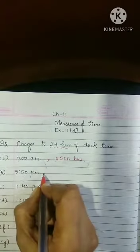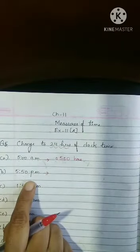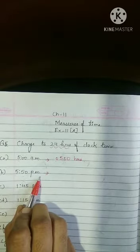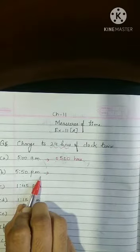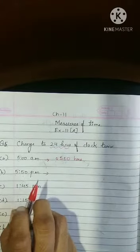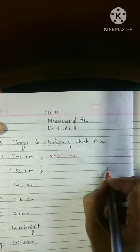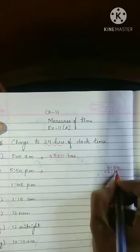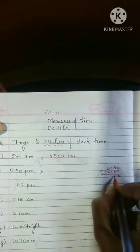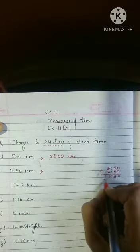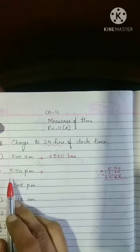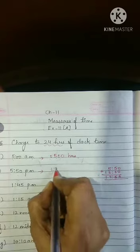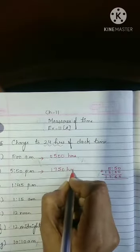Now 5:50 pm. PM is we are talking about evening. So after 12 o'clock it gets changed. How do you change? See 5:50 is given to us. In this when we add 12, 0 5 7 1. So when we convert according to the 24 hours of clock, 5:50 pm means 17:50 hours. We will not put any dots.